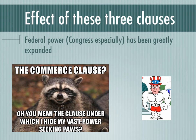Overall, the effect of these three clauses — the Necessary and Proper Clause, the Supremacy Clause, and the Commerce Clause — has been to greatly expand federal power. More specifically, it has greatly expanded Congressional power, and they have grown quite strong as a result of these three clauses.